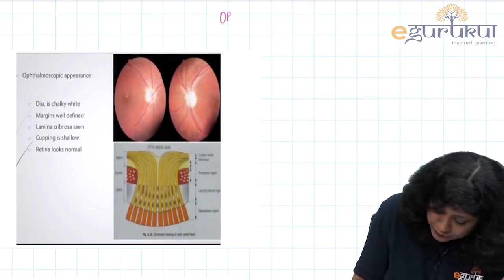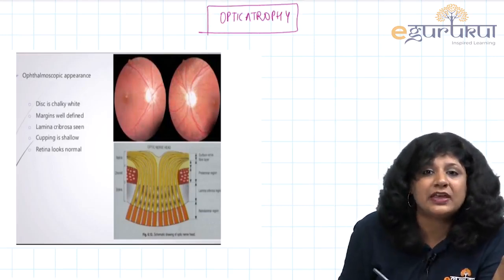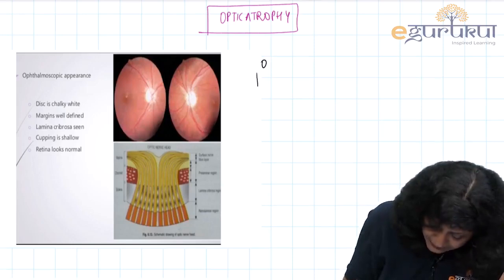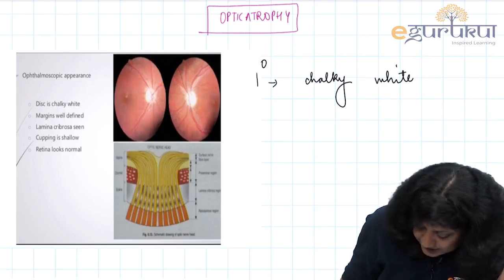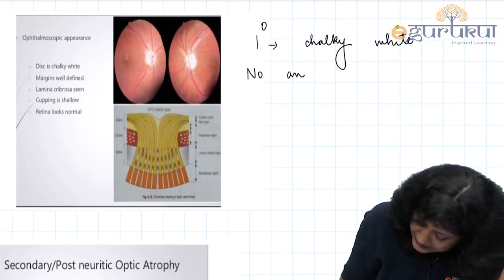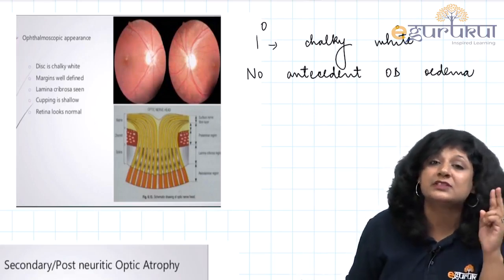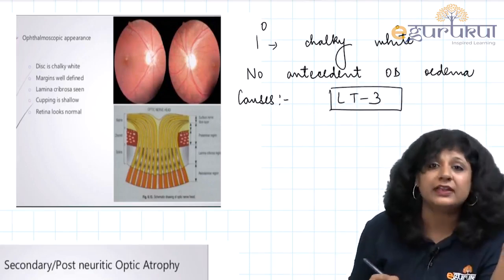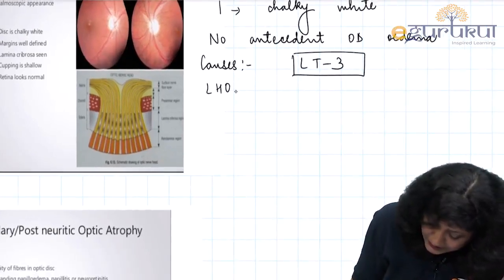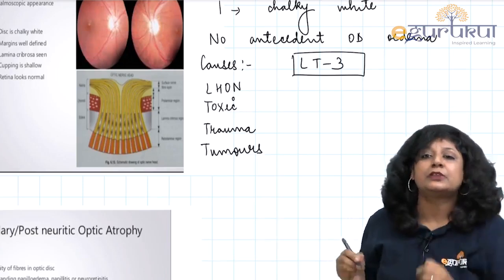Optic atrophy has three types. Primary optic atrophy is chalky white in color with no history of previous optic disc edema. Causes are remembered as LT3: Leber's hereditary optic neuropathy, toxic optic neuropathy, trauma, and tumors.